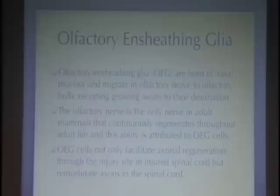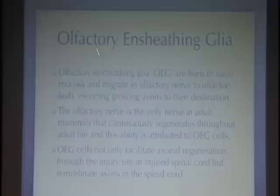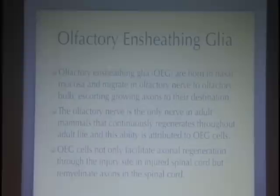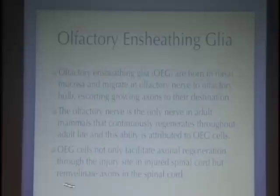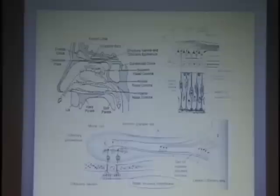A student of mine, Kai Liu, started working with me about 10 years ago. He was very interested in a cell called olfactory ensheathing glial cells. These cells are born in the nose and migrate in the olfactory nerve to the olfactory bulb, escorting growing axons to their destinations. The olfactory nerve is the only nerve in any mammal that continually regenerates throughout adult life. Olfactory ensheathing glial cells not only facilitate axonal regeneration but also remyelinate axons in the spinal cord.